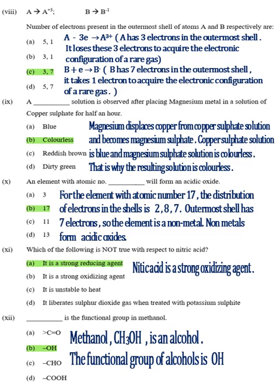Part 9, Answer B, Colorless, Colorless. Magnesium displaces copper from copper sulfate solution and becomes magnesium sulfate. Copper sulfate solution is blue and magnesium sulfate solution is colorless. That is why the resulting solution is colorless.